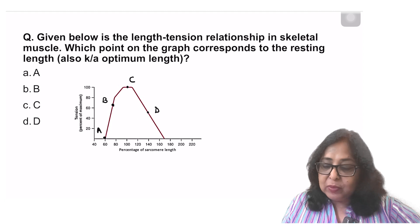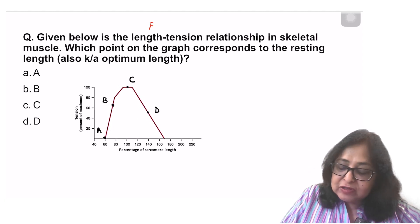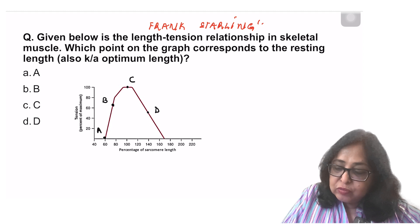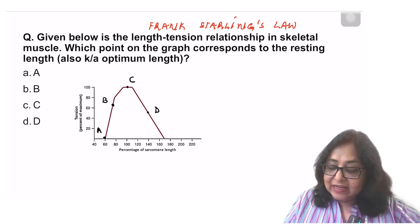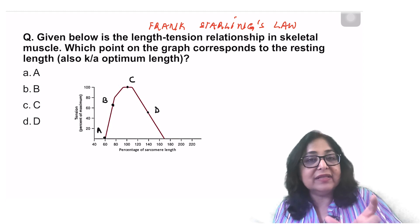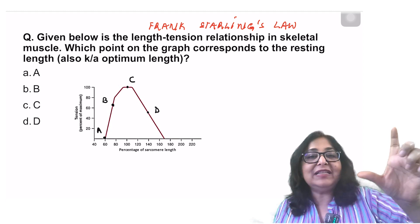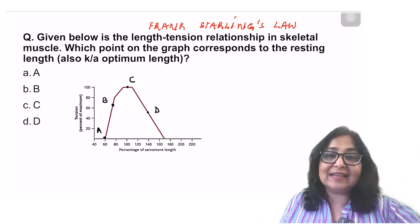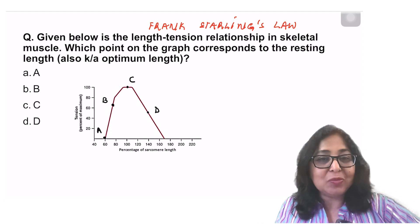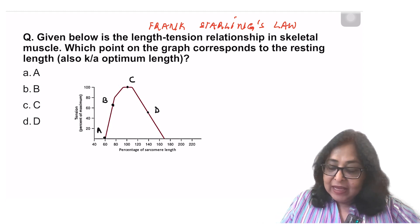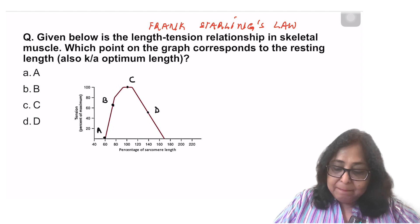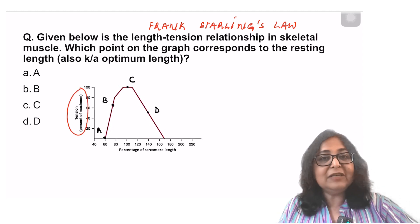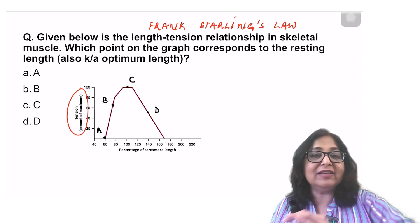Let's look at the next question. It says: given below is the length-tension relationship. This is also known as Frank-Starling's law. It is applicable to skeletal as well as cardiac muscles, but not to smooth muscles. In the length-tension relationship, we take the initial length of the muscle or the sarcomere on the x-axis and the tension generated on the y-axis. The relationship is applicable to isometric contractions. More the initial length, more is the tension generated, but up to a physiological limit, beyond which further increase in initial length decreases the tension generated.